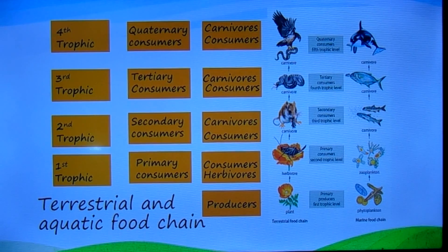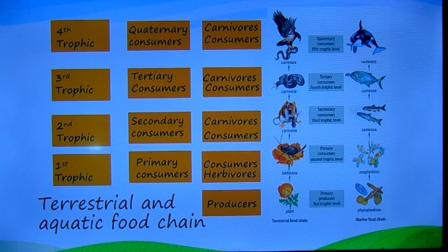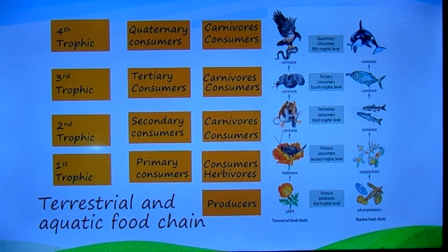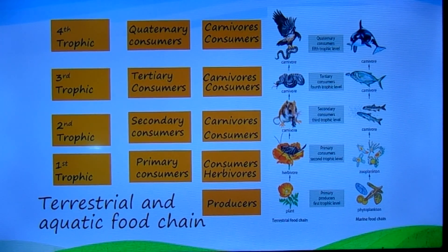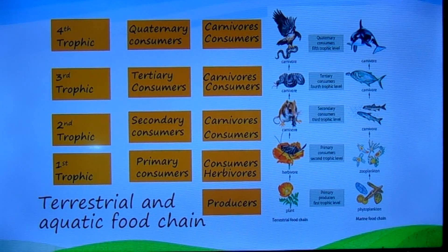Another related way to think about feeding relationships among organisms uses the concept of trophic level. The word 'trophic' is Greek in origin and means food. A trophic level in an ecosystem is a feeding level through which energy and matter are transferred. The first trophic level in any ecosystem provides all the chemical energy required to fuel the other trophic levels, and consists of producers. All remaining trophic levels consist of consumers.